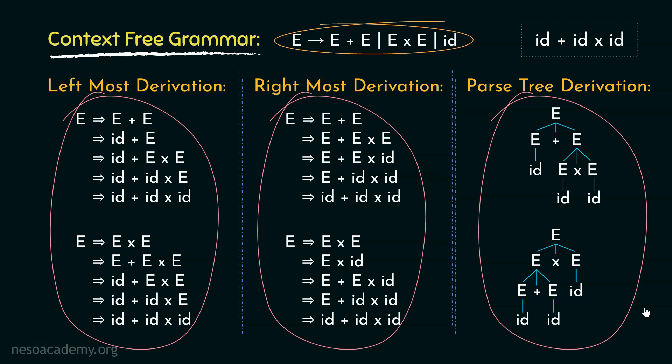If it had been unambiguous, the derivations should have been unique and one and only. Due to ambiguity, all the parsers except operator precedence parser will get confused and will produce wrong outcomes.